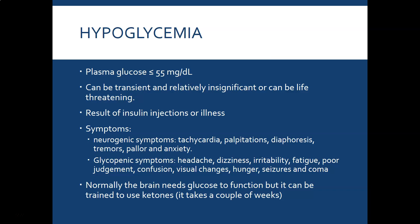The neurogenic symptoms of hypoglycemia include tachycardia, palpitations, diaphoresis, tremors, pallor, and anxiety. The neuroglycopenic symptoms include headache, dizziness, irritability, fatigue, poor judgment, confusion, visual changes, hunger, seizures, and coma — people with hypoglycemia can act as though they're drunk. The brain needs glucose to function; while it can be trained to use ketones, some percentage always requires glucose. If the brain doesn't get enough glucose, serious signs and symptoms will appear. That concludes the lesson.